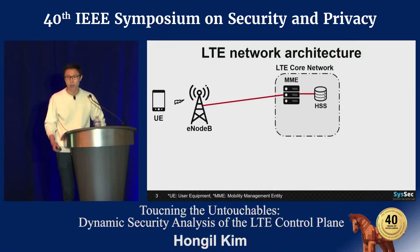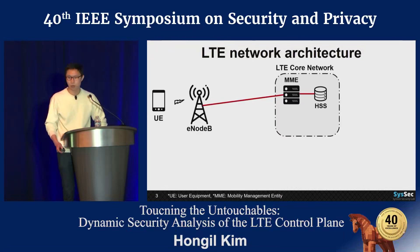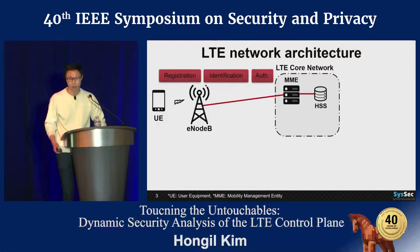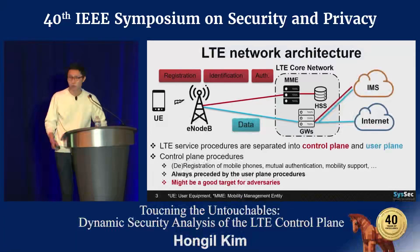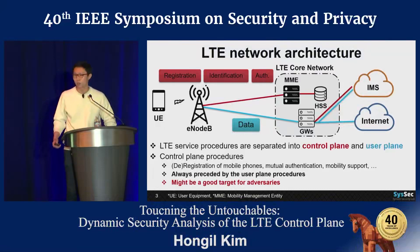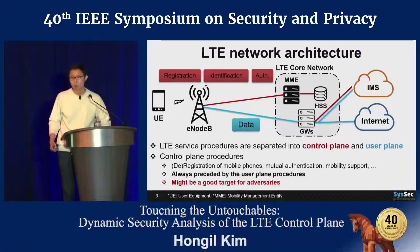The MME is one of the most important nodes in the LTE core network. It handles all the critical control plane procedures such as registration, identification, and user authentication. After the UE completes the registration procedure, it is finally connected to the internet through the gateways.